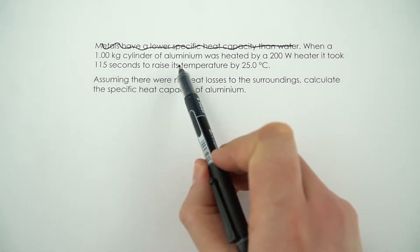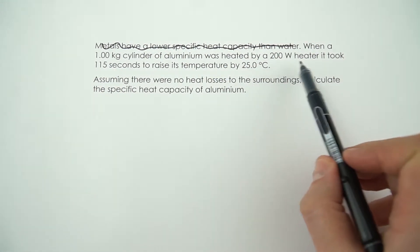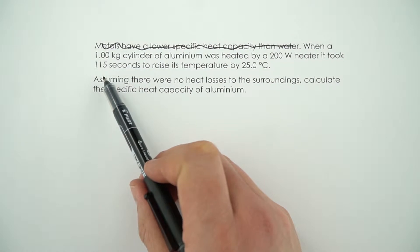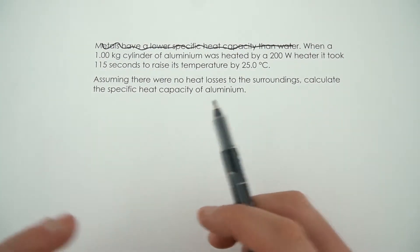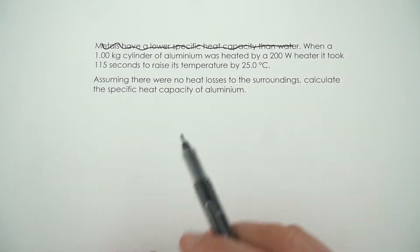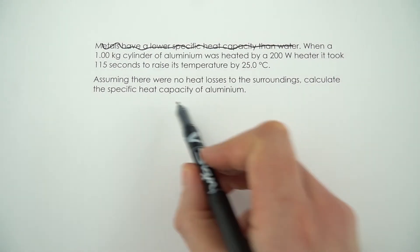When a 1 kilogram cylinder of aluminum was heated by a 200 watt heater, it took 115 seconds to raise its temperature by 25.0 degrees Celsius. Now we're going to assume that all of the energy went into heating up the aluminum rather than being lost to the surroundings, and we need to calculate the specific heat capacity of aluminum.